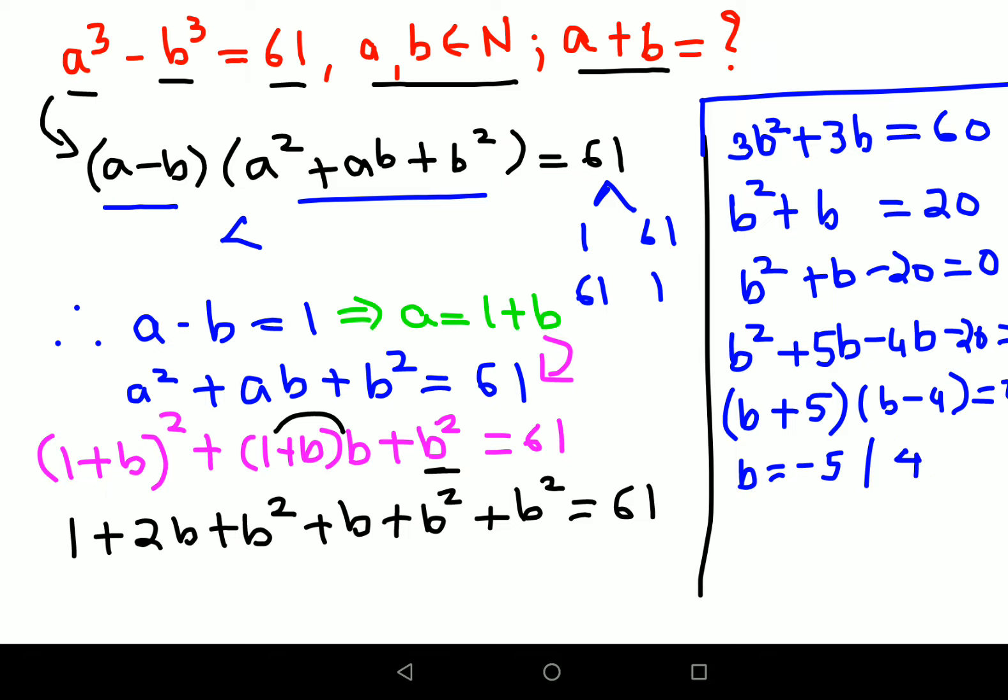Now this has to be rejected because both of them are belonging to natural numbers. So b value is just 4. So a value will be what? A is 1 plus b. So a value is 5.